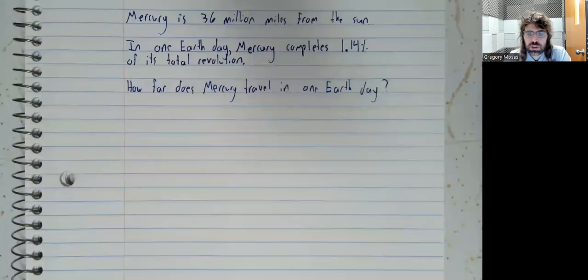So in this example, we're going to assume that planets orbit the sun in perfectly circular paths. That's not actually quite true, but close enough. And we'll look at the planet Mercury. So Mercury is 36 million miles from the sun, and in one Earth day it completes 1.14% of its total revolution. How far does Mercury travel in one Earth day?